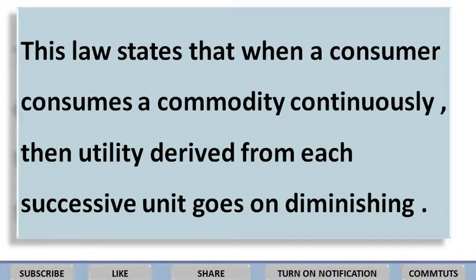So, law of diminishing marginal utility कहता है कि जब भी कोई consumer किसी भी commodity को continuously consume करता जाएगा, तो utility derived from each successive unit goes on diminishing — वो decrease होती जाएगी। ऐसा इसलिए होता है क्योंकि किसी भी commodity को बार-बार consume करते जाएंगे तो उससे मिलने वाला satisfaction level भी कम होता जाएगा।